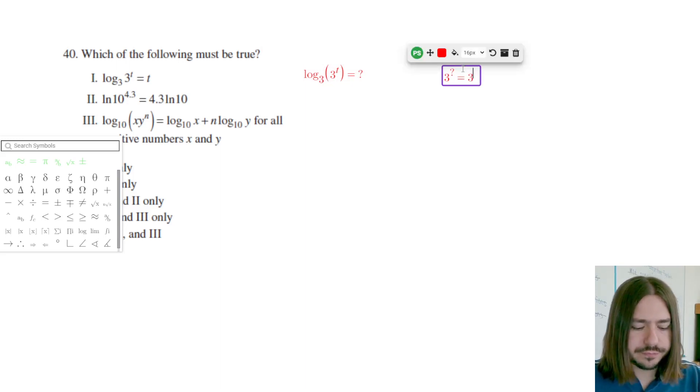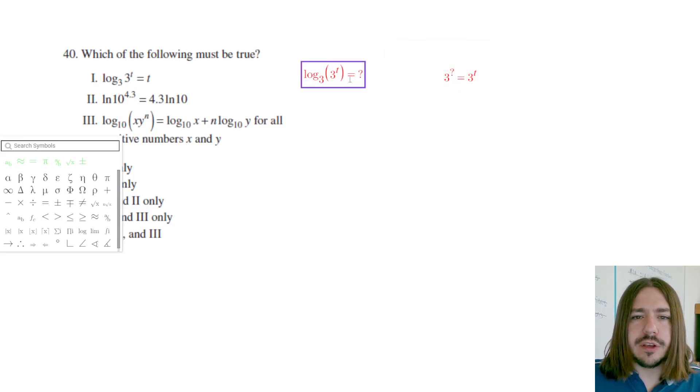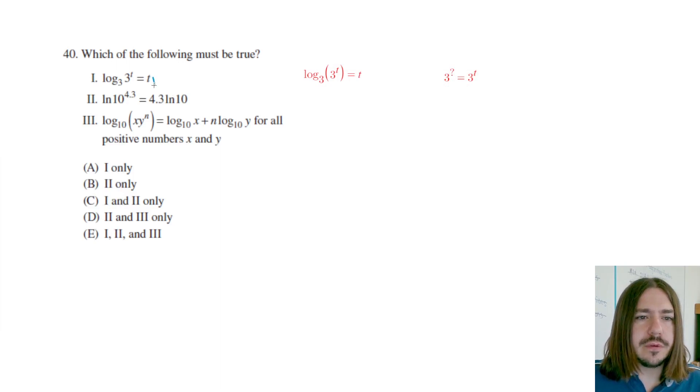We can see that 3 to what power equals 3 to the t, and now it's a little bit more obvious that t has to be whatever that is. So yeah, this does equal t, so this one checks out. This one is true. So we can eliminate II only, we can eliminate II and III only because we know that I is legit.